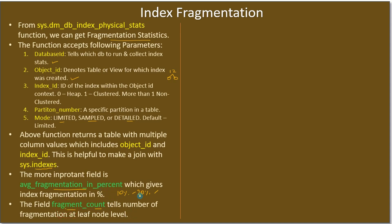The fragment_count field tells the number of fragmentations at the leaf node level. avg_fragmentation_in_percent gives fragmentation as a percentage while fragment_count gives it as a count. The fragmentation splits the data structure into multiple pages, so the count tells how deep the fragmentation is.